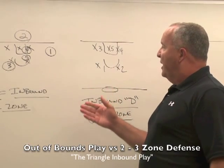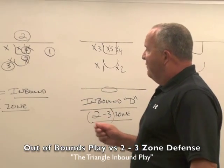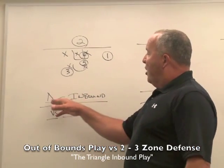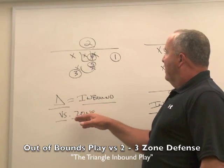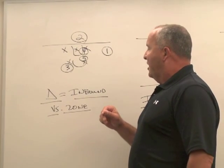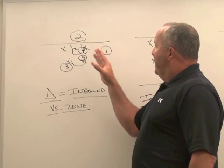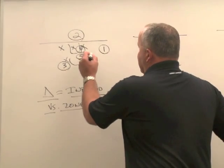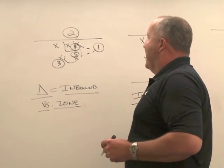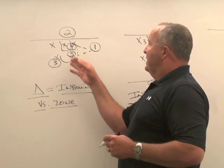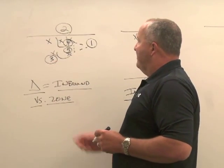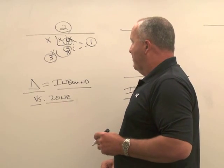This is going to be an inbound play versus this 2-3 zone, and we call it 'triangle' in our particular program versus this zone. You can see the X's are lined up just like the middle diagram, and we set up in a triangle formation made up of our 1, our 4, and our 5. Our 2 is our designated inbounder, and our 3 is our safety valve over the top. The X's once again represent the defense diagrammed earlier.